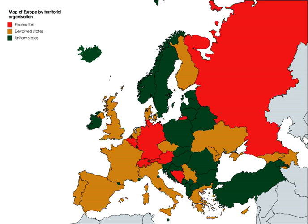The structures of most federal governments incorporate mechanisms to protect the rights of component states. One method, known as intra-state federalism, is to directly represent the governments of component states in federal political institutions. Where a federation has a bicameral legislature the upper house is often used to represent the component states while the lower house represents the people of the nation as a whole. A federal upper house may be based on a special scheme of apportionment, as is the case in the Senates of the United States and Australia, where each state is represented by an equal number of senators irrespective of population size. Alternatively, members of an upper house may be indirectly elected by the government or legislature of the component states, as in the German Bundesrat and the Council of the European Union.